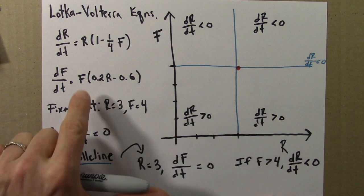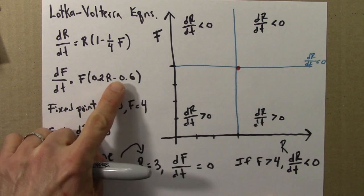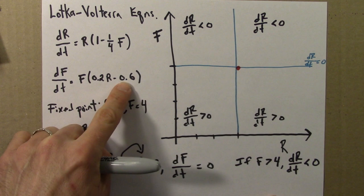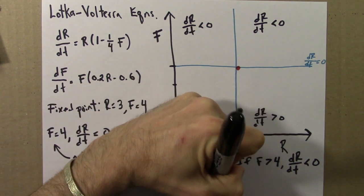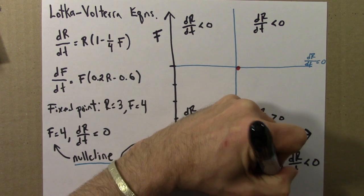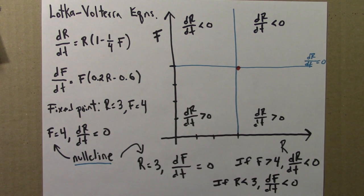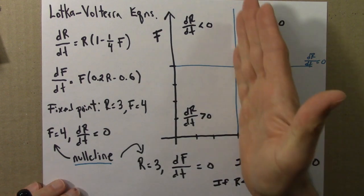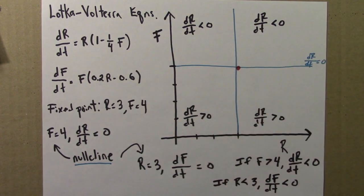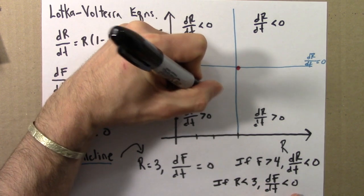Alright, so now let's look at what this tells us. So this tells me that if r is less than 3, then df/dt, let's see, if r is less than 3, df/dt will be negative. Let me write that down. If r is less than 3, df/dt is less than 0. Okay, so if r is less than 3, that means I'm to the left of this line, this nullcline, then df/dt is 0. Okay, so let me write that. Let's see, df/dt, sorry, is less than 0.